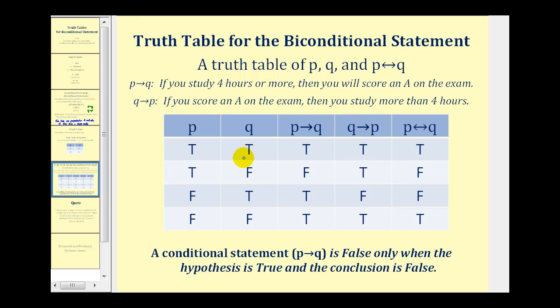And so by now we should be pretty familiar that for p and q we're going to have true true, true false, false true, and false false for the possibilities of p and q.